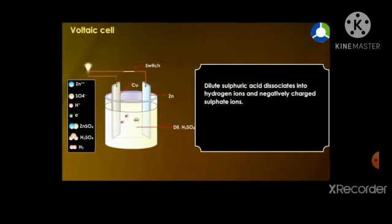The dilute sulphuric acid here dissociates into hydrogen ions and negatively charged sulphate ions. Because of the movement of these positive and negative ions, the electricity is produced and it can be seen by the glow of the bulb.